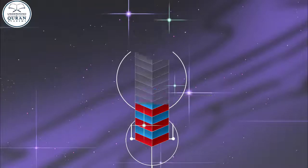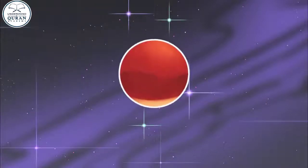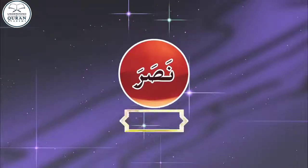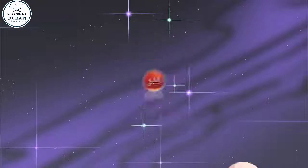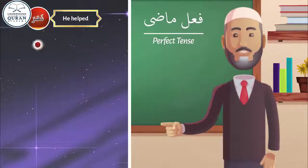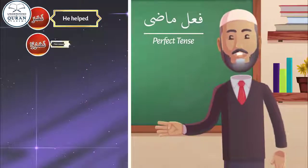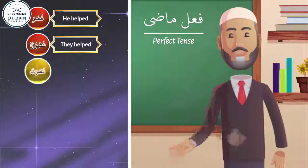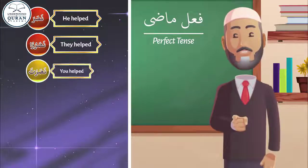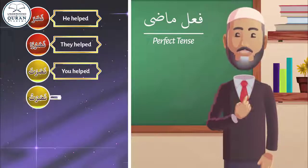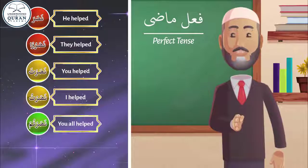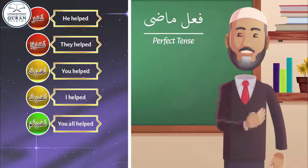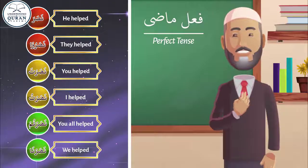Let us take the Madhi forms for Nasara. Nasara means 'he helped.' Can you translate using TPI? Nasara — he helped. Nasaru — they helped. Nasarta — you helped. Nasartu — I helped. Nasartum — you all helped. Nasarna — we helped.